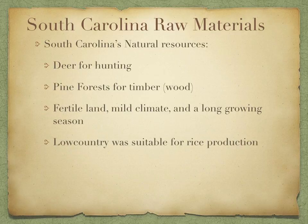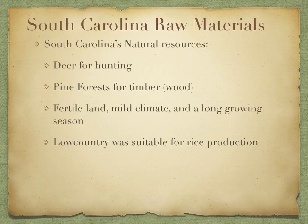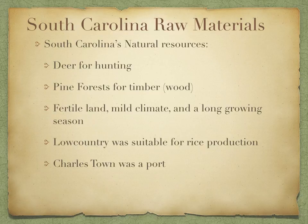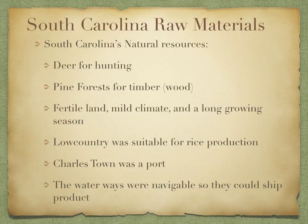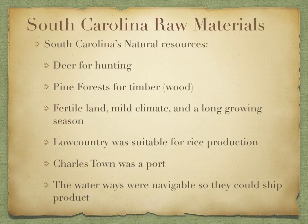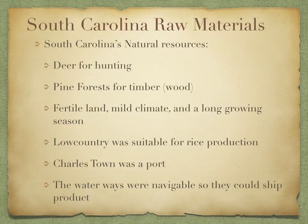The low country was suitable for rice production because of its many rivers and swamplands. Down in Beaufort and Charleston, those swamplands are where they probably grew rice. Water is very important for rice. Charleston was a port, so a lot of trade went in and out — exports and imports. The waterways were navigable so they could ship their products to other places, including the Congaree River, the Waccamaw River, the Ashley River, and the Cooper River down in Charleston.